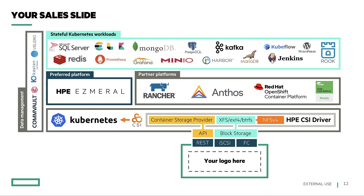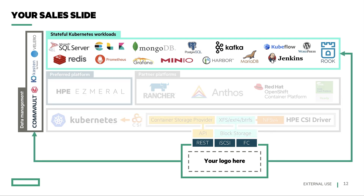The point I was making earlier is that our sales slide now becomes your sales slide. You can write your own container storage provider, put your logo there, and all of a sudden all of these ecosystem components become available to you. What users really care about is stateful Kubernetes workloads and their applications, but day-two operations are becoming very important. You also get access to data management partners like Commvault, Kasten, and Velero — your users will be able to protect workloads by creating snapshots on your storage appliance and shipping those snapshots to an S3 bucket or an NFS datastore.